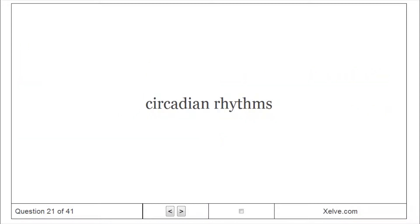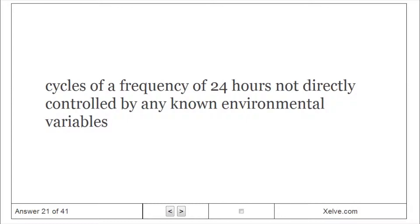Circadian rhythms: cycles of a frequency of 24 hours not directly controlled by any known environmental variables.